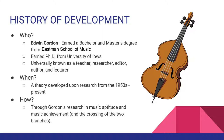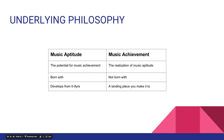This theory came about from his research from the 1950s until he died. It was made through his research in music aptitude and music achievement, which brings us to our next slide. As you can see from this table, I have compared music aptitude and music achievement. Music aptitude is the potential for music achievement. Music achievement is the realization of music aptitude, so there is a cross between the two.